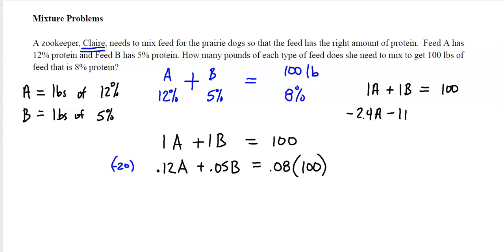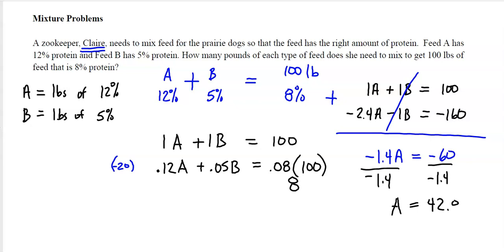0.08 times 100, this comes out to be just 8. Negative 20 times 8 is negative 160. Now I think I'm ready to combine because I have opposites. 1 take away 2.4, that's negative 1.4A equals negative 60. I'm going to divide both sides by negative 1.4. I'll cheat and use my calculator. Negative 60 divided by negative 1.4, that is roughly 42.857. Let's just call that 42.9 to make this problem easier.